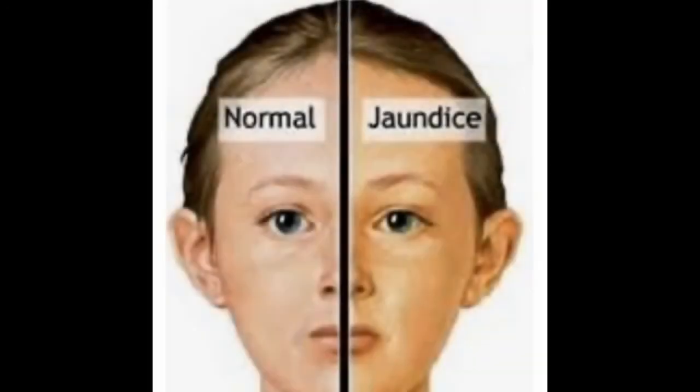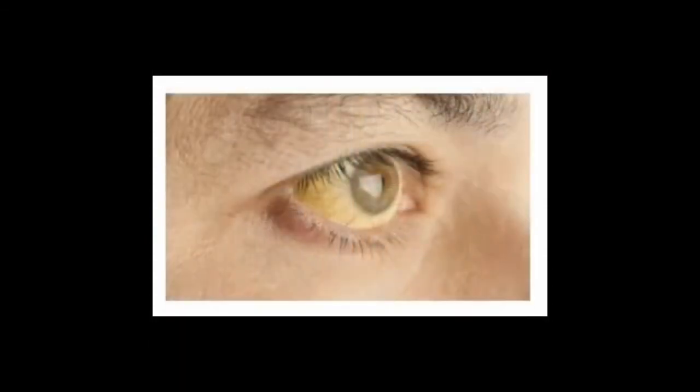This video demonstrates a person experiencing jaundice. Jaundice is a condition in which the skin, whites of the eyes, and mucous membranes turn yellow because of high levels of bilirubin, a yellow-orange bile pigment. Jaundice has many causes including hepatitis, gallstones, and tumors.